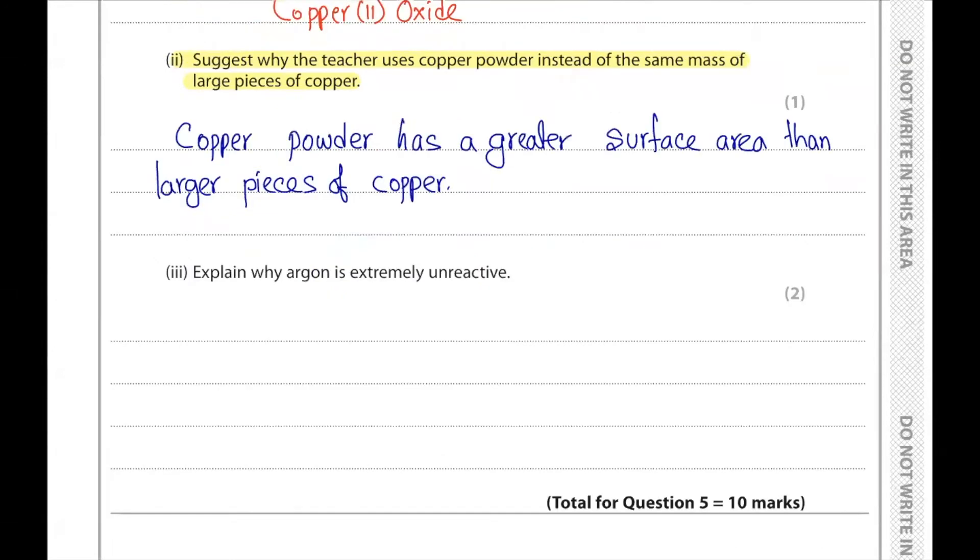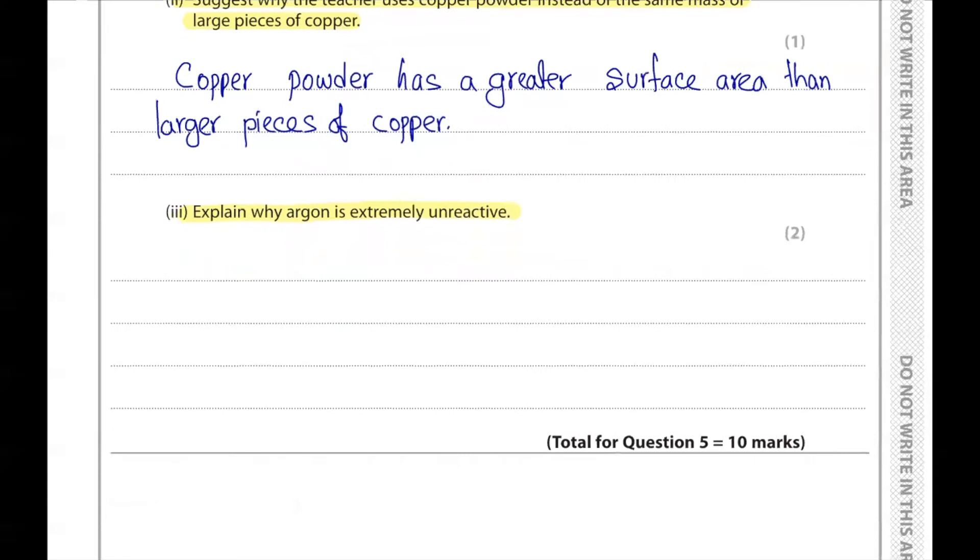Part 3. Explain why argon is extremely unreactive. Argon has its full outer shell of electrons. It belongs to group 0 and has a complete outer shell of electrons. That's why it does not want to lose or gain electrons, which makes it very unreactive.